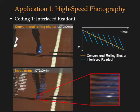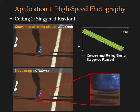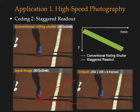Here is an example. The top image is taken with conventional rolling shutter. The bottom image is taken with interlaced readout. From this single input image, eight sub-images are extracted, which capture the event of running. Here is the image taken with staggered readout, and here is the output. As shown, it captures the precise moment the foot touches the ground.